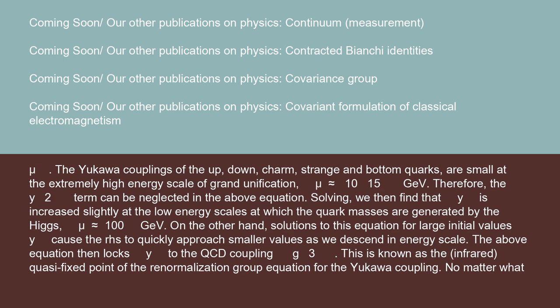The Yukawa couplings of the up, down, charm, strange, and bottom quarks are small at the extremely high energy scale of grand unification, μ ≈ 10^15 GeV. Therefore, the y² term can be neglected in the above equation. Solving, we then find that y is increased slightly at the low energy scales at which the quark masses are generated by the Higgs, μ ≈ 100 GeV.